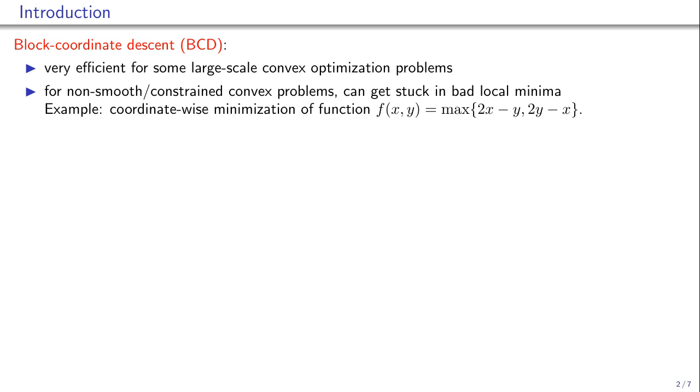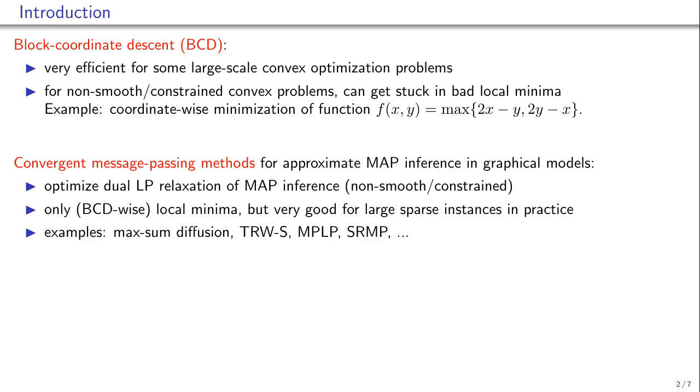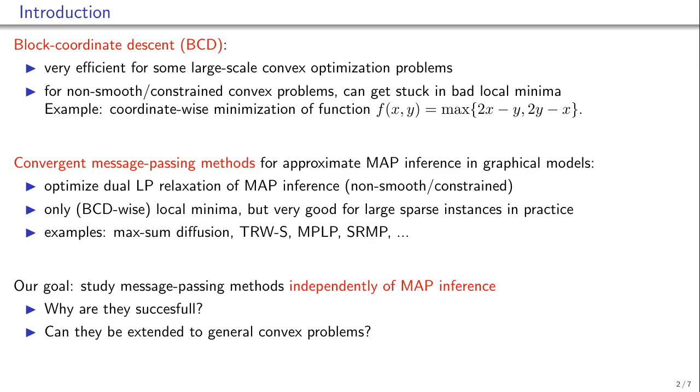A notable exception is convergent message passing methods used to solve dual LP relaxation of MAP inference in graphical models. They do not guarantee global optimality, but in practice they often converge to good local optima.